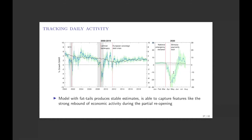If I was just giving you the point estimate, I would give you a false sense of precision about this GDP nowcast. We want a nowcast where when things are uncertain, the bands become wider, and when things are calmer, they narrow — and that is what stochastic volatility does for you.